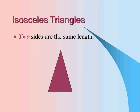Then isosceles triangles have two sides that are the same length. So for this triangle, sides A and B would be equal.